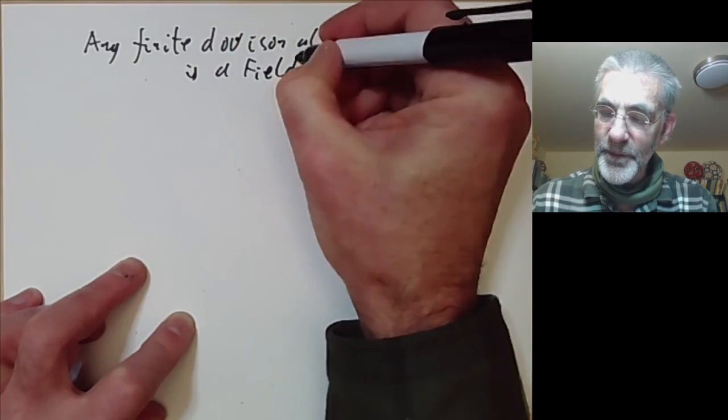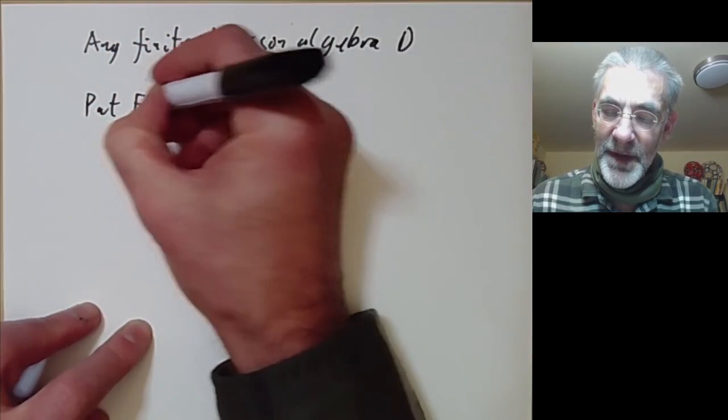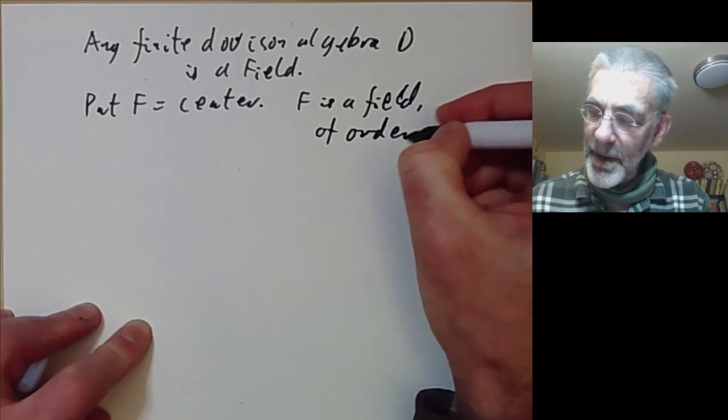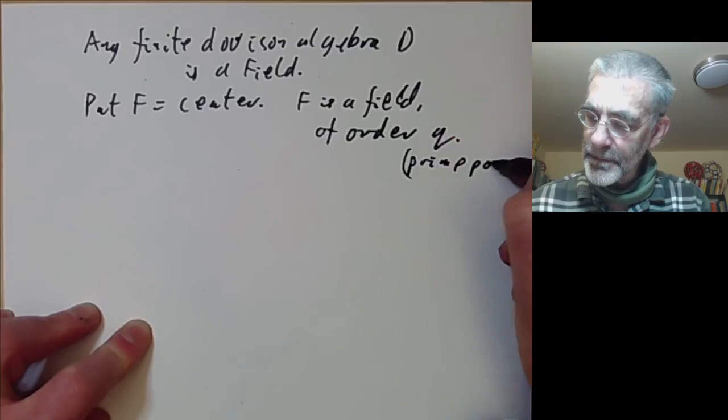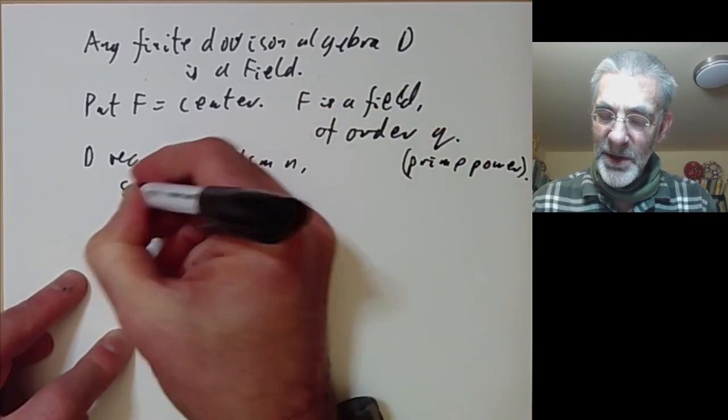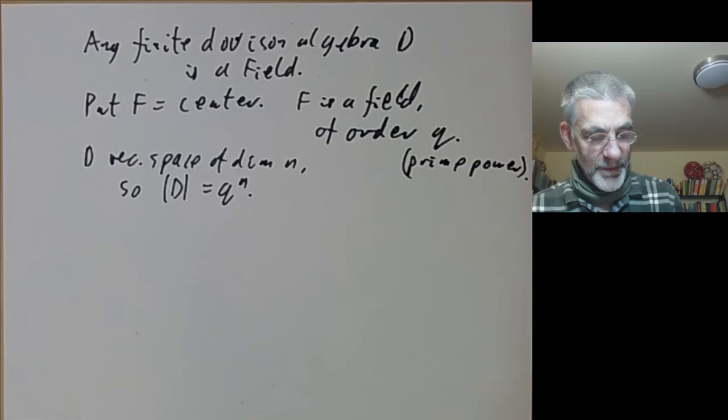And let's start by doing the easy stuff. So we put F to be the center, so F is a field, and we classified the fields, they have order q, where q is some prime power. And D is a vector space of dimension n, so the order of D is equal to q to the n, rather obviously.